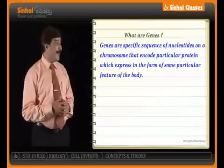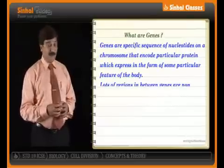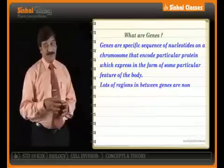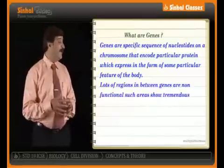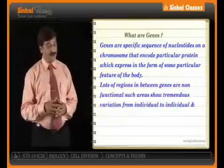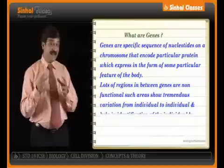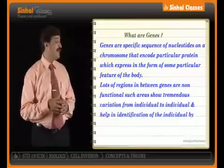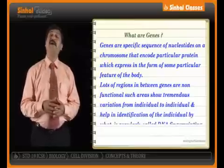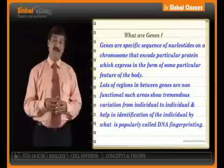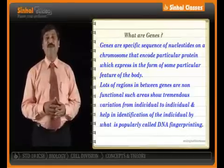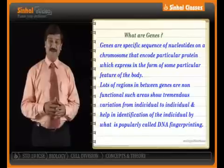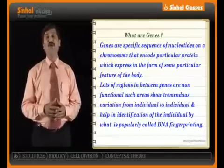When we talk about genes, you should know that a lot of regions in between genes are non-functional. Such areas show a tremendous variation from individual to individual, and they help us in identification of individuals by a very popular method that we all know — DNA fingerprinting. With this, we have concluded our chapter, which is cell division and structure of chromosomes.